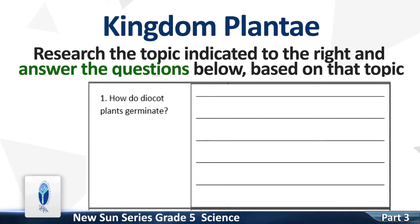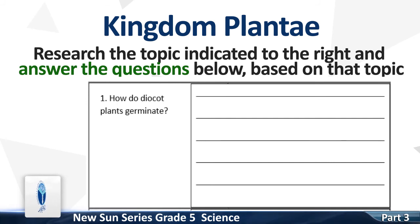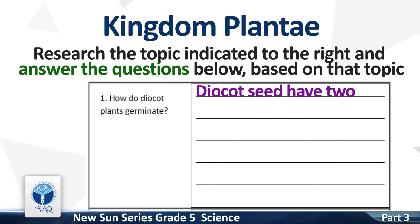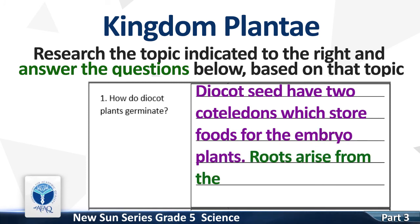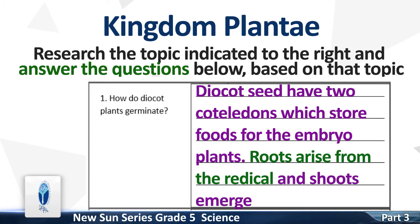Number 1. How do dicot plants germinate? Let's write. Dicot seeds have two cotyledons which store food for the embryo plant. Roots arise from the radicle and shoots emerge from the plumule.